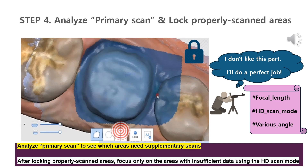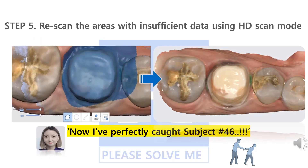To scan insufficient areas, we recommend increasing the focal length and adjusting the local length to scan only that part as if you are sniping that area. HD scan mode would be helpful in this process. When scanning margins, scan in a rolling motion so that you hit the target from various angles. After achieving green colors on the reliability map for all margin areas, your scan for the Modulus crown is finished. The last step is re-scanning the areas with insufficient data using HD scan mode.